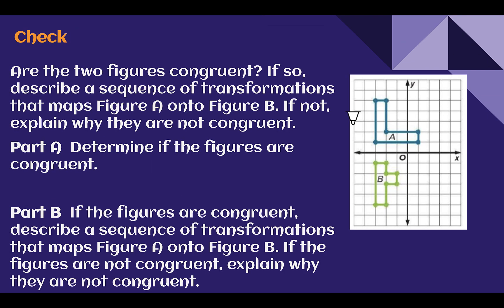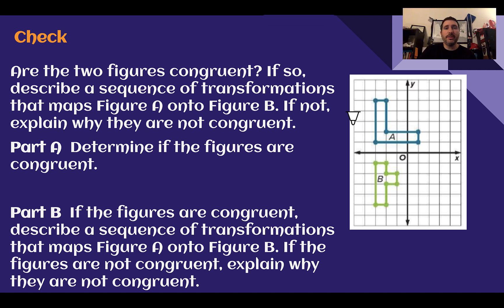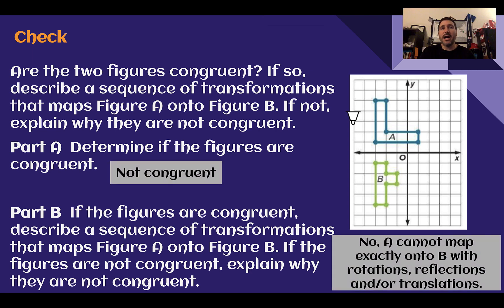Check your understanding: read through the situation and answer both parts. Check your answer: this is not congruent — there is nothing you can do to get A to map exactly onto B using rotations, reflections, or translations. Just by looking at the picture, you can see they are definitely not even close to being the same shape. This one looks like an L; this one maybe looks like an F or part of a T. They are not congruent.